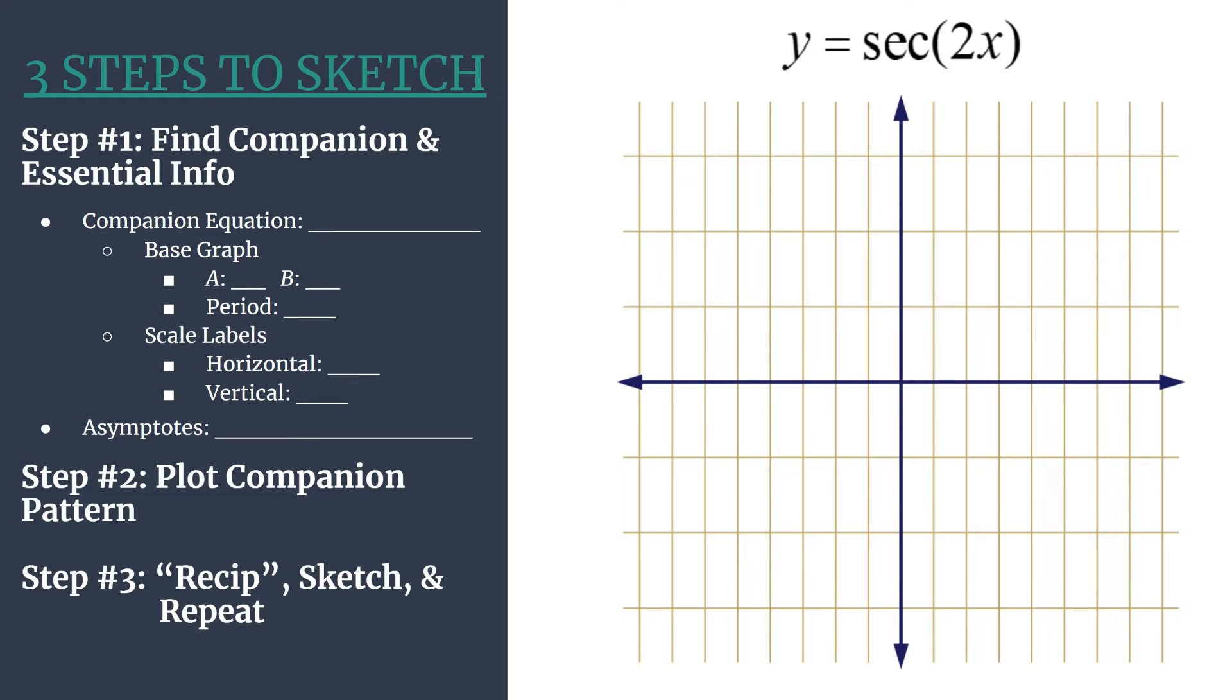First notice that our equation is in the form y equals a secant bx. That'll be helpful for identifying a and b, and also we see that there is no shifting going on here, we don't have a c or d term. We'll look at advanced shifted graphs in a later video.